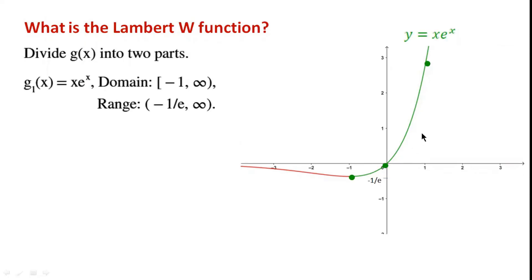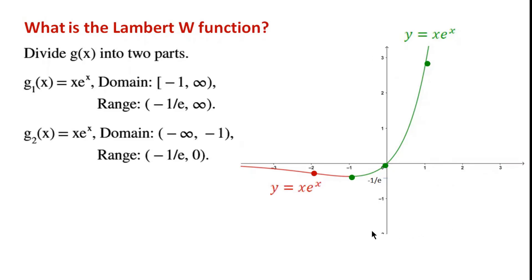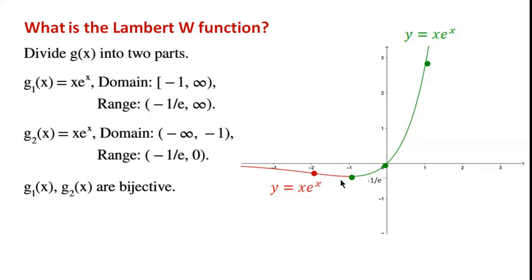We divide g(x) into two parts. g₁(x), shown in green, has domain from minus 1 (inclusive) to infinity, and range from minus 1/e to infinity. g₂(x), shown in red, has domain from minus infinity to minus 1, and range from minus 1/e to 0. Both g₁ and g₂ are bijective.